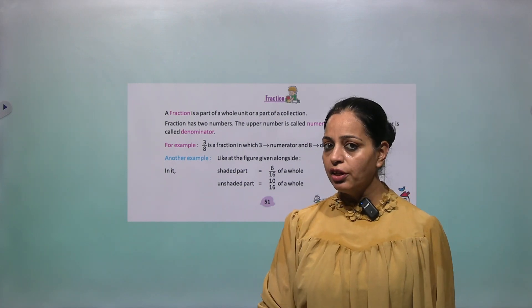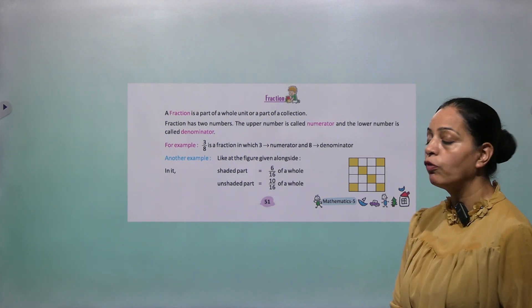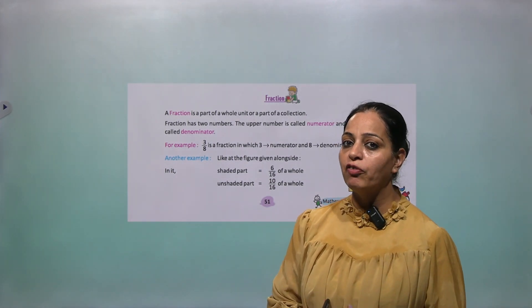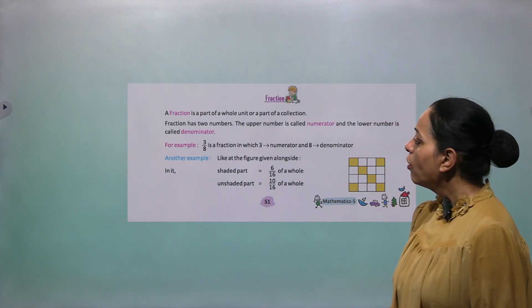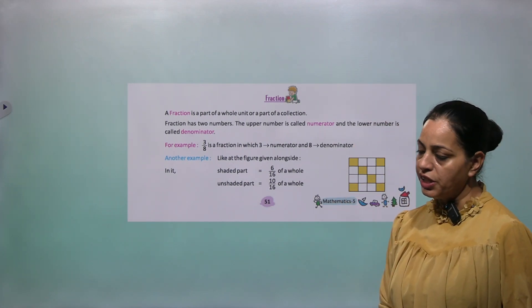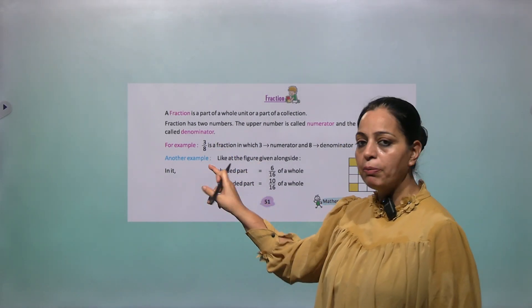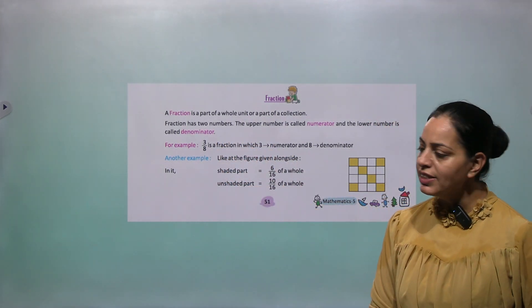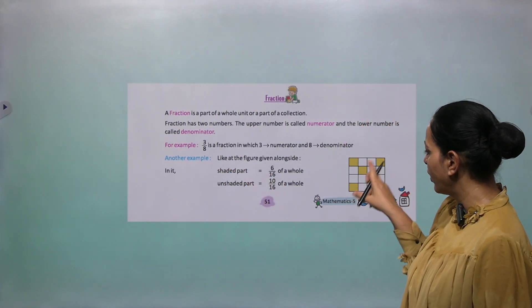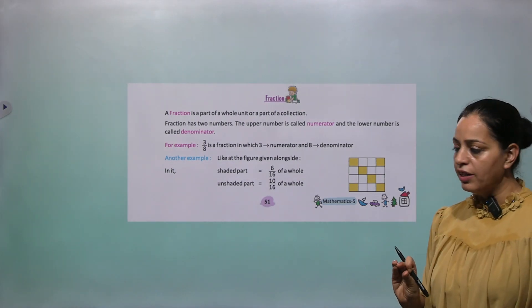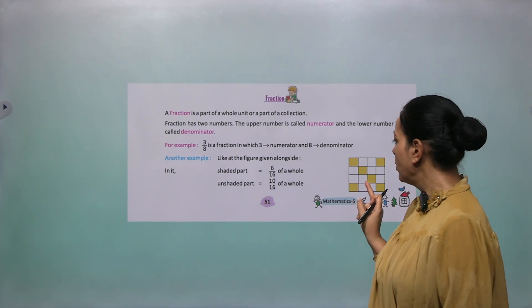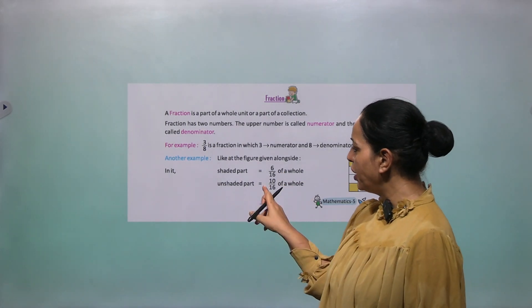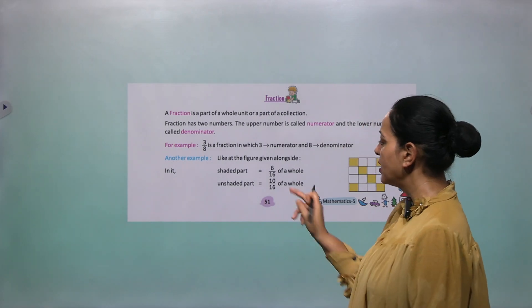So now we are coming to fraction. Fraction you know very well. A fraction is a part of the whole unit or a part of the collection. A fraction has two numbers. The upper number is called the numerator and the lower number is called the denominator. For example, 3 by 8 is a fraction — 3 is the numerator and 8 is the denominator. Looking at a figure with shaded parts: 6 parts are shaded out of a total of 16, so the shaded fraction is 6 by 16, and the unshaded part is 10 by 16.